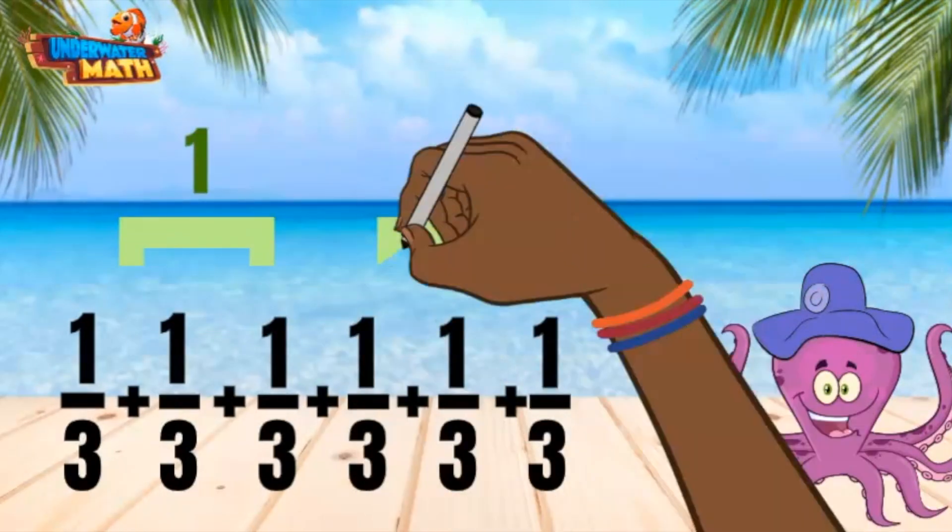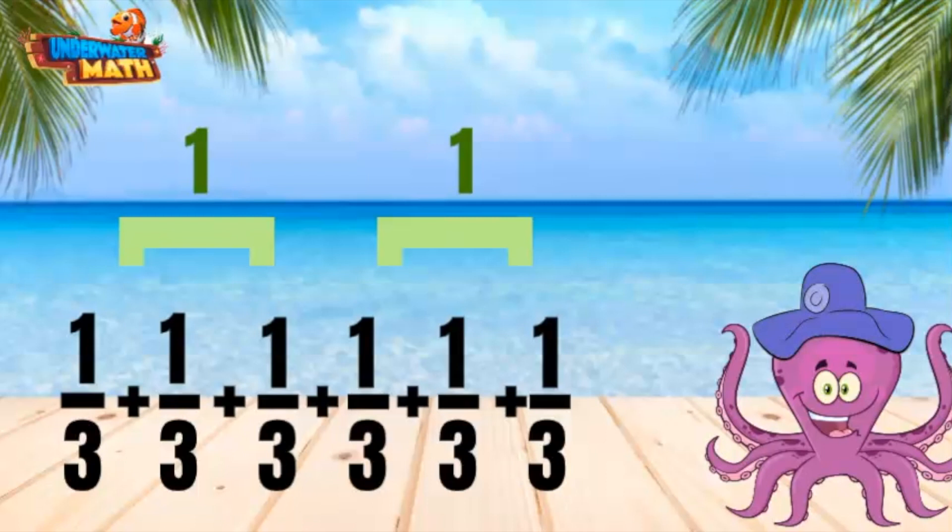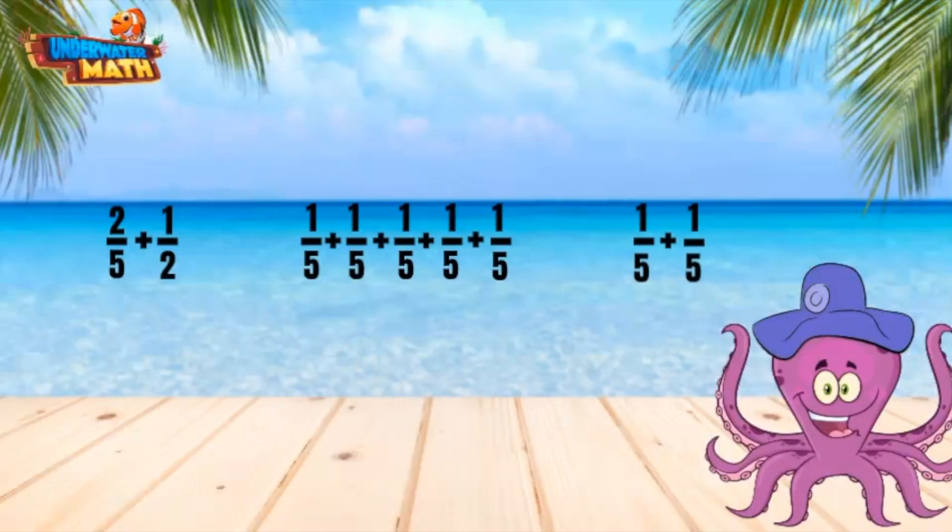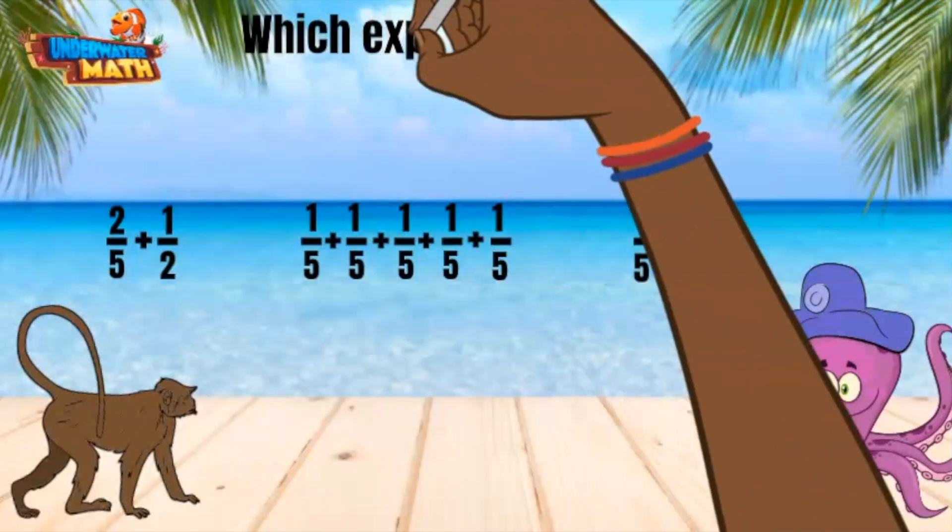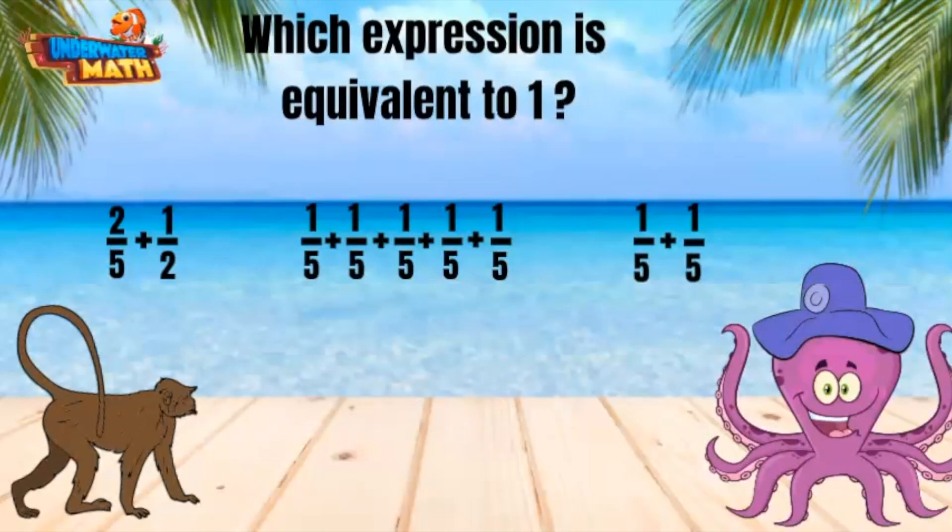One-third added six times equals two wholes. Monty is a simple guy. He is just trying to figure out which expression is equivalent to one. Can you help him? Let's look at the first option.